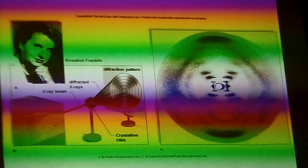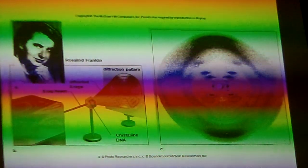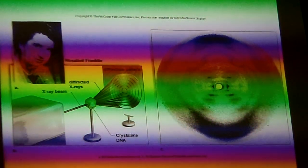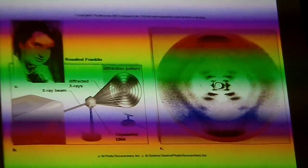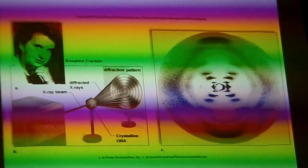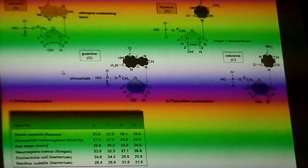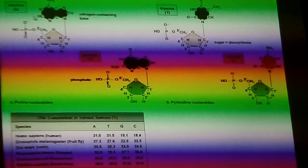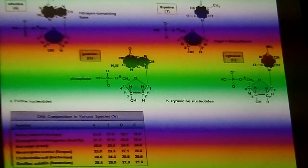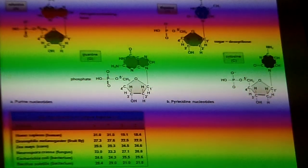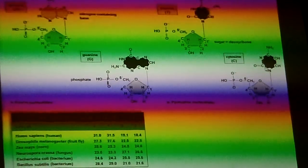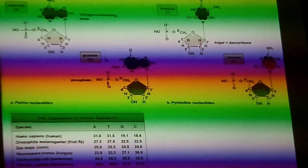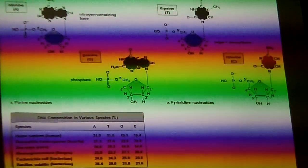Each nucleotide is different because of the nitrogen base. That's correct. Great statement. Each nucleotide is different only because of the nitrogen base. There are four different kinds. Notice these two, G and A, have double ring nitrogen bases. And notice C and T have single ring nitrogen bases.